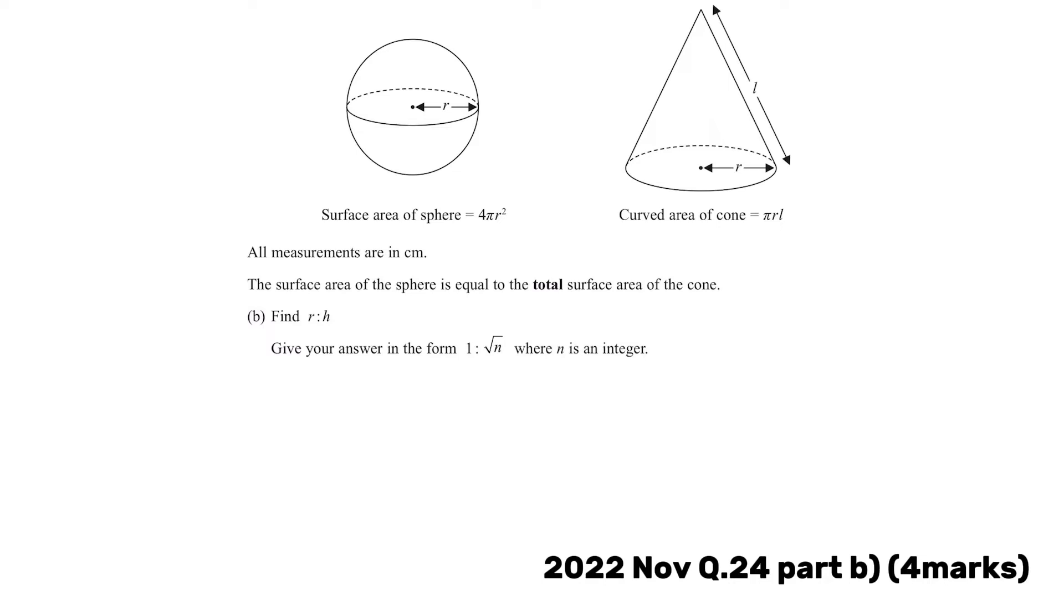Here we have the second part of the question. Again, it's asking us to find the ratio of R to H. However, this time we are told that the surface areas of the shapes are equal to each other. We're given the surface area of a sphere, which is 4 pi R squared. I'll note surface area of sphere as S.A., which is 4 pi R squared.